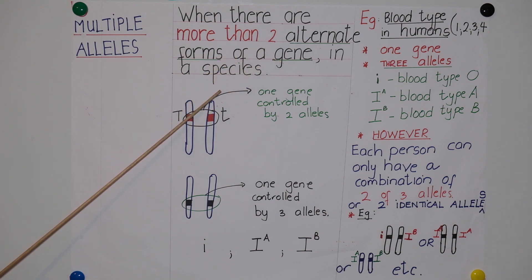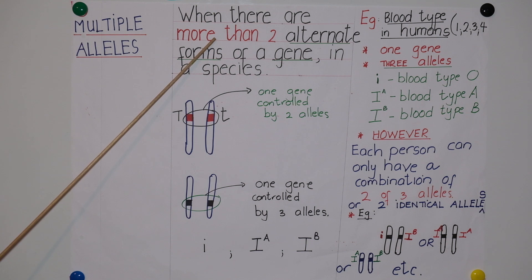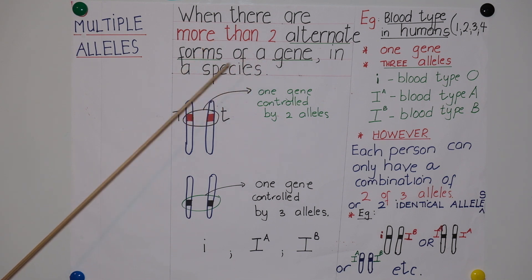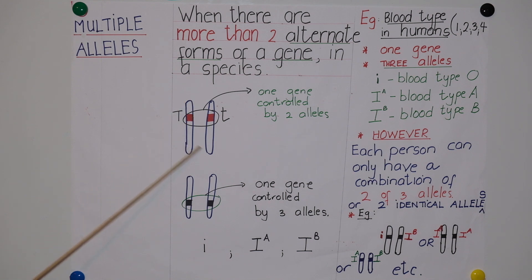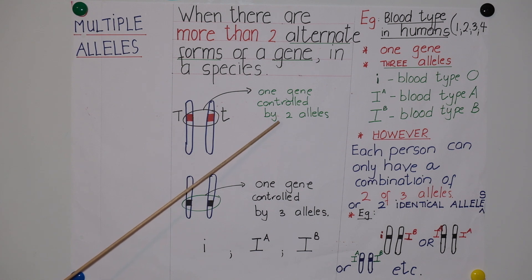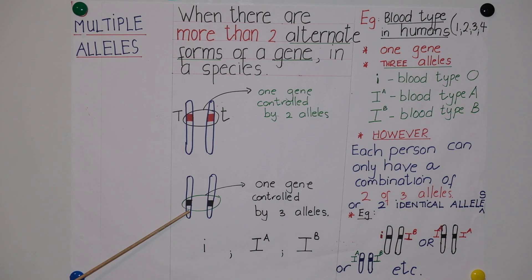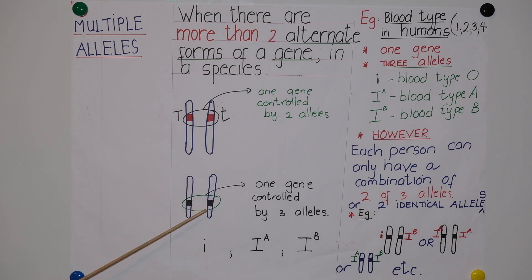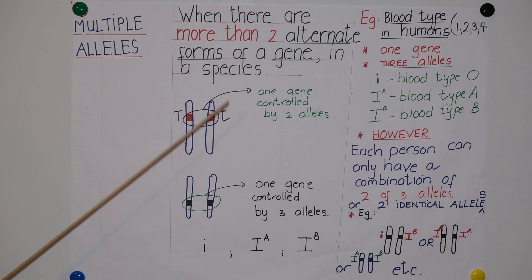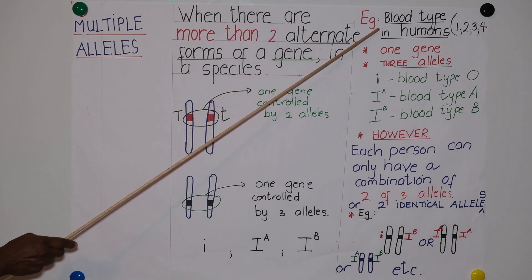The next concept is multiple alleles. In other words, there are more than two alleles which control a gene in a species. So far we've learnt that a single gene is controlled by two alleles. However, some genes can be controlled by three, four, or more alleles, and these are called multiple alleles. They are called alleles because they can occur on the same positions — also referred to as loci — on homologous chromosomes.